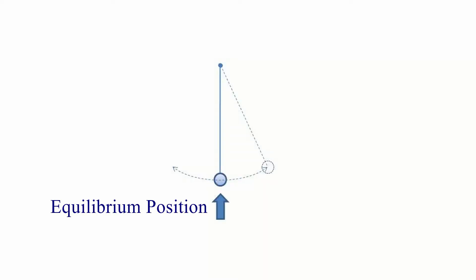The center point of oscillation is called the equilibrium position — that is where it was when we started the motion. The distance it travels to one side from the equilibrium point is called the amplitude of oscillation. The time taken for one full oscillation is called the time period.